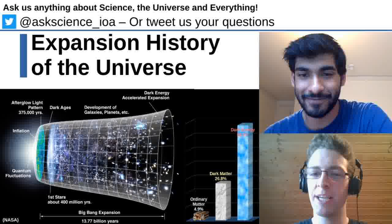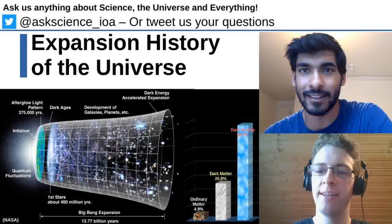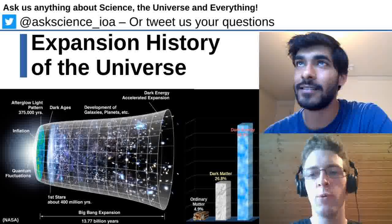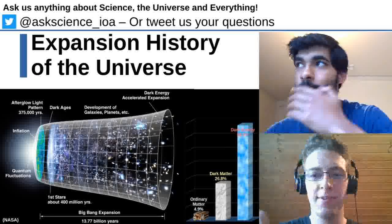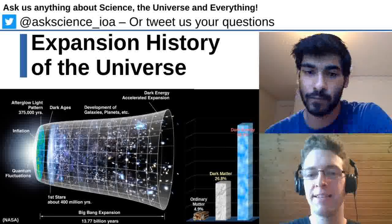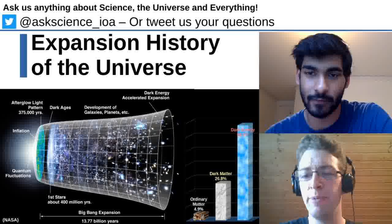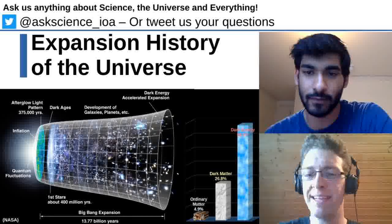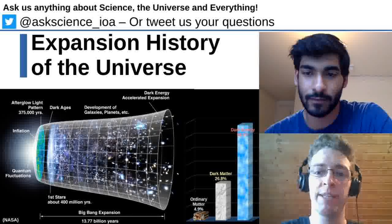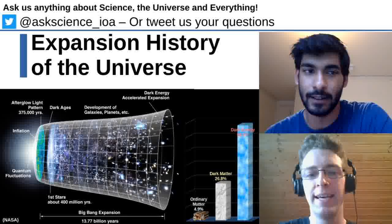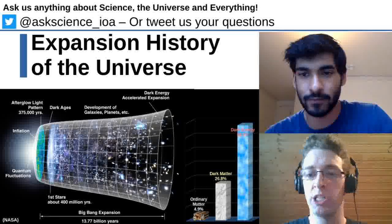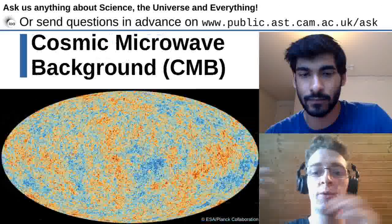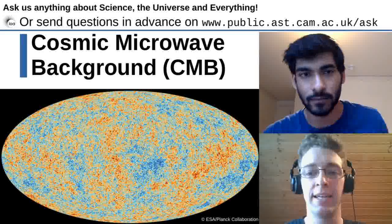I'm working on a topic called re-ionization — looking at when the first stars were created in the universe. The universe is about 14 billion years old, but for the first billion years, lots of stuff happened but there were no stars. They appeared later and started to turn the whole universe, which before was full of neutral hydrogen, into ionized gas — the state we are in today.